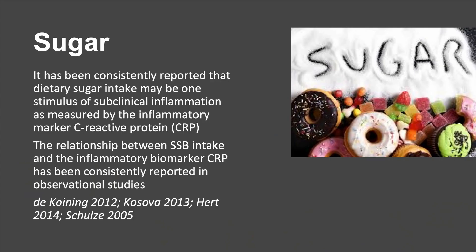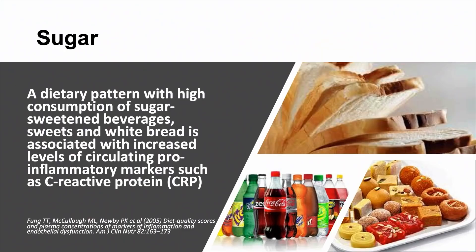It's been pretty consistently reported that dietary sugar intake is a stimulus of subclinical inflammation. It causes CRP to go up quite nicely, and particularly it's been shown that sugar-sweetened beverages raise the level of CRP. This paper showed a dietary pattern with high consumption of sugar-sweetened beverages, sweets and white bread, again associated with increasing CRP levels.